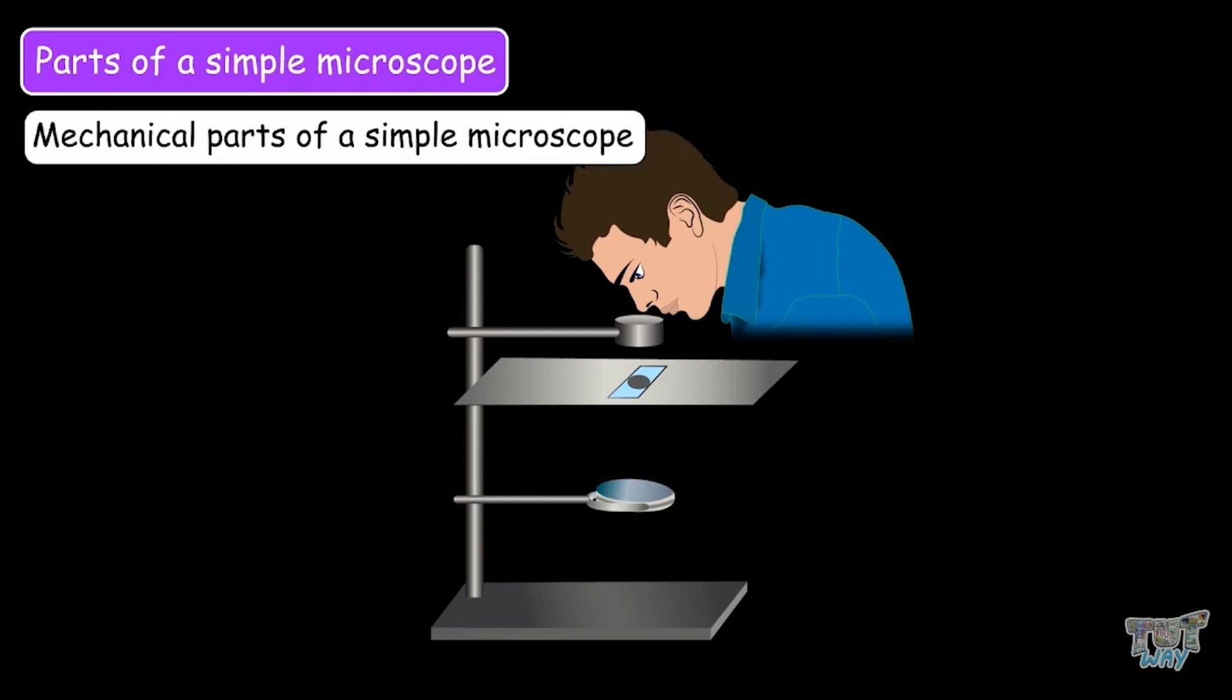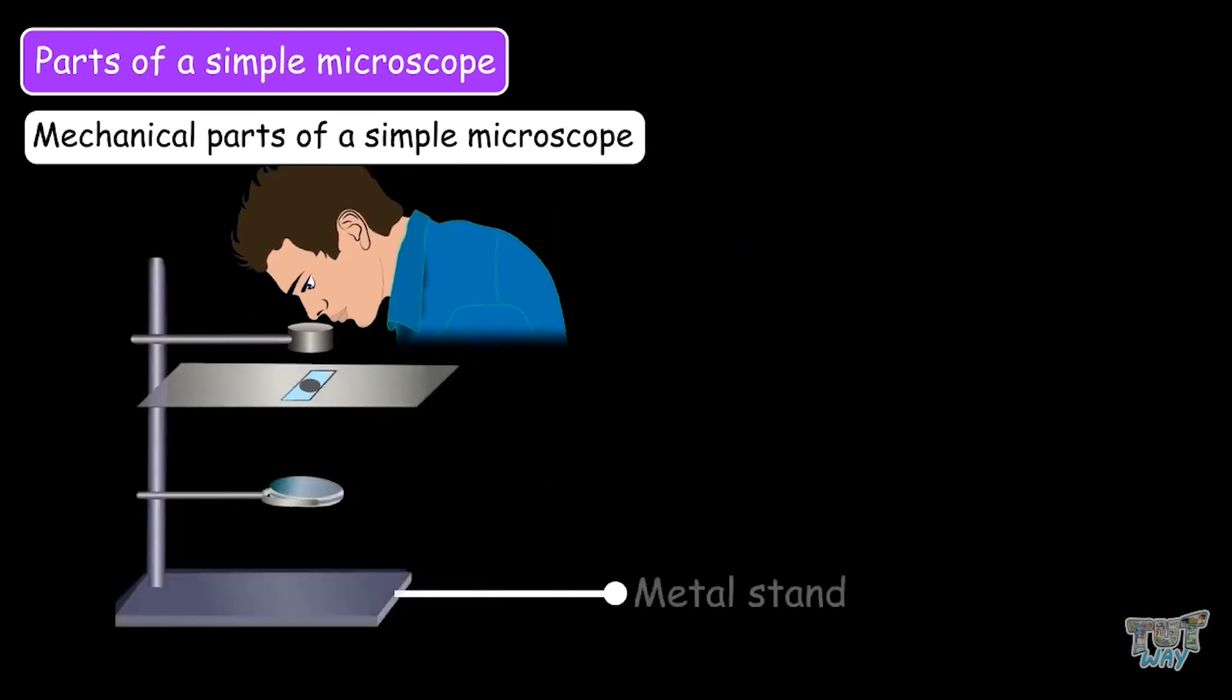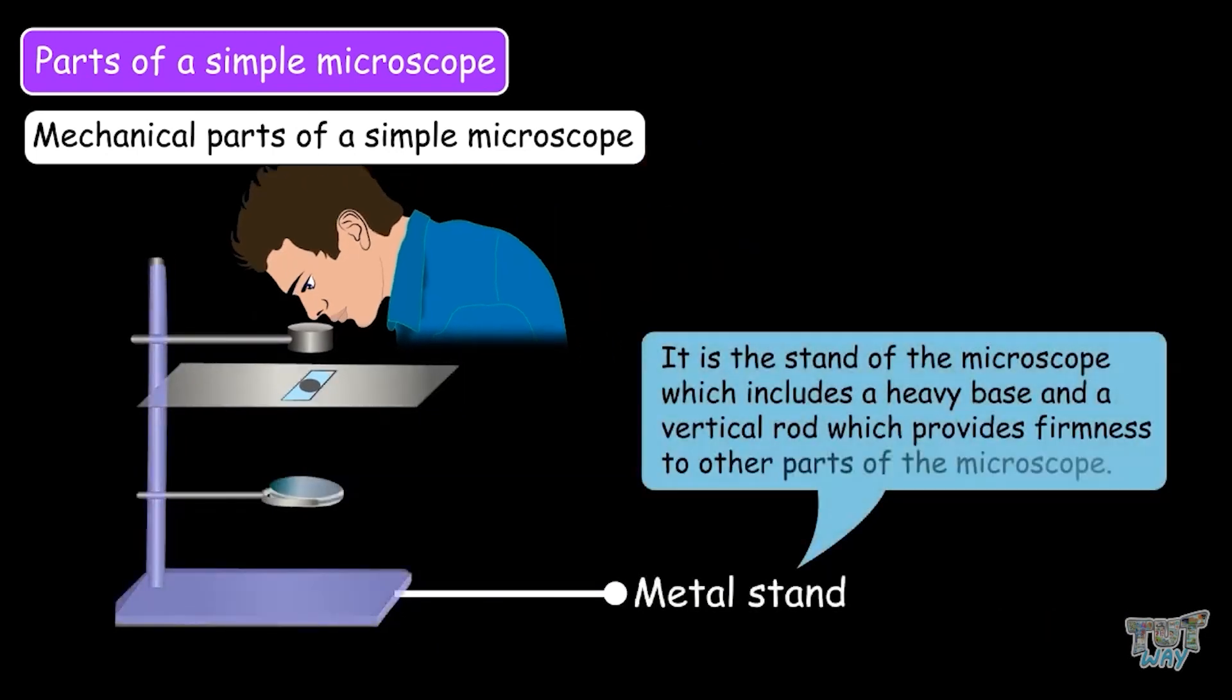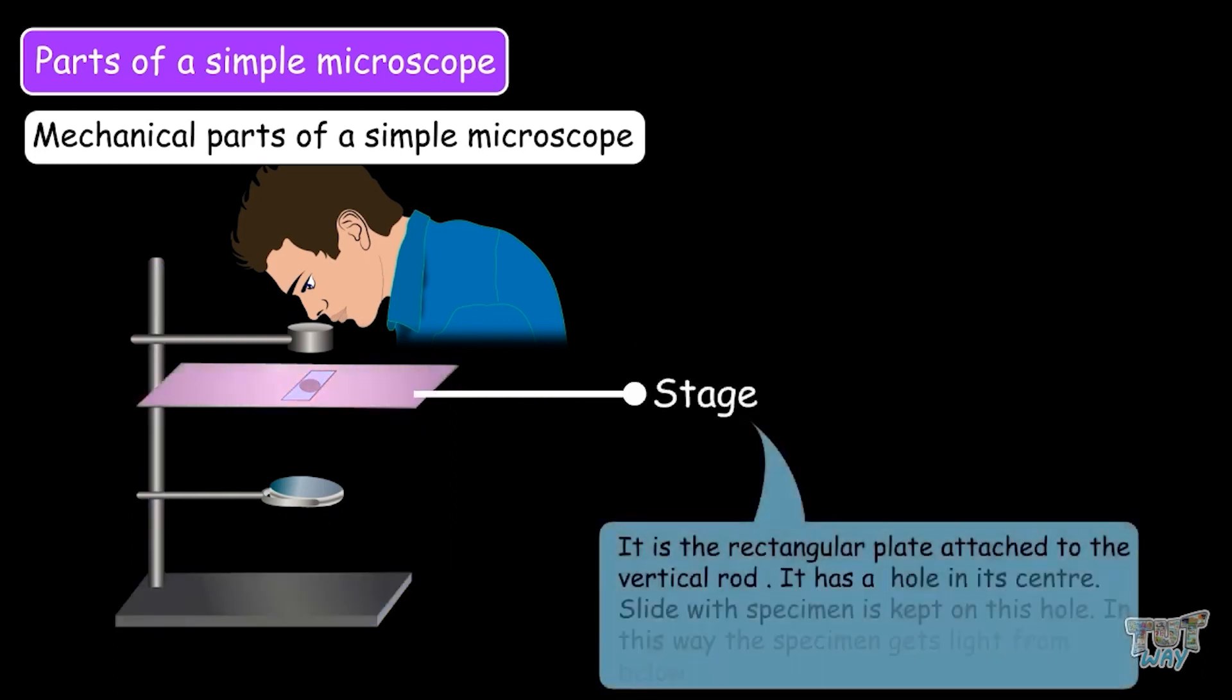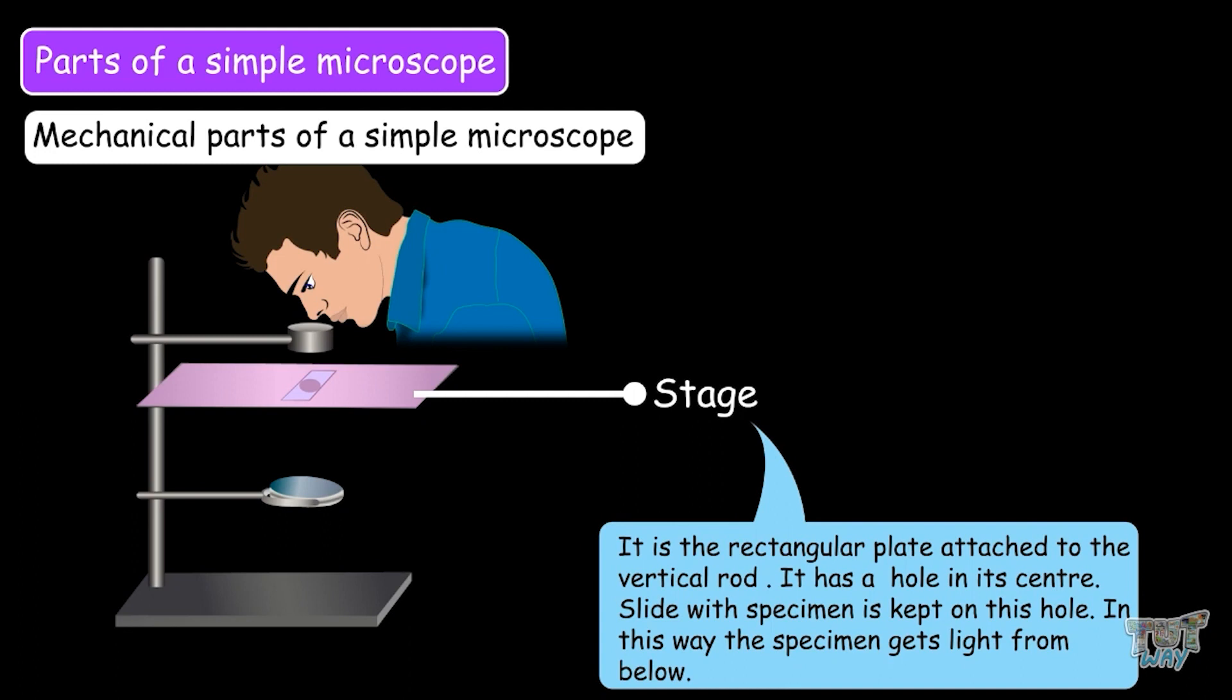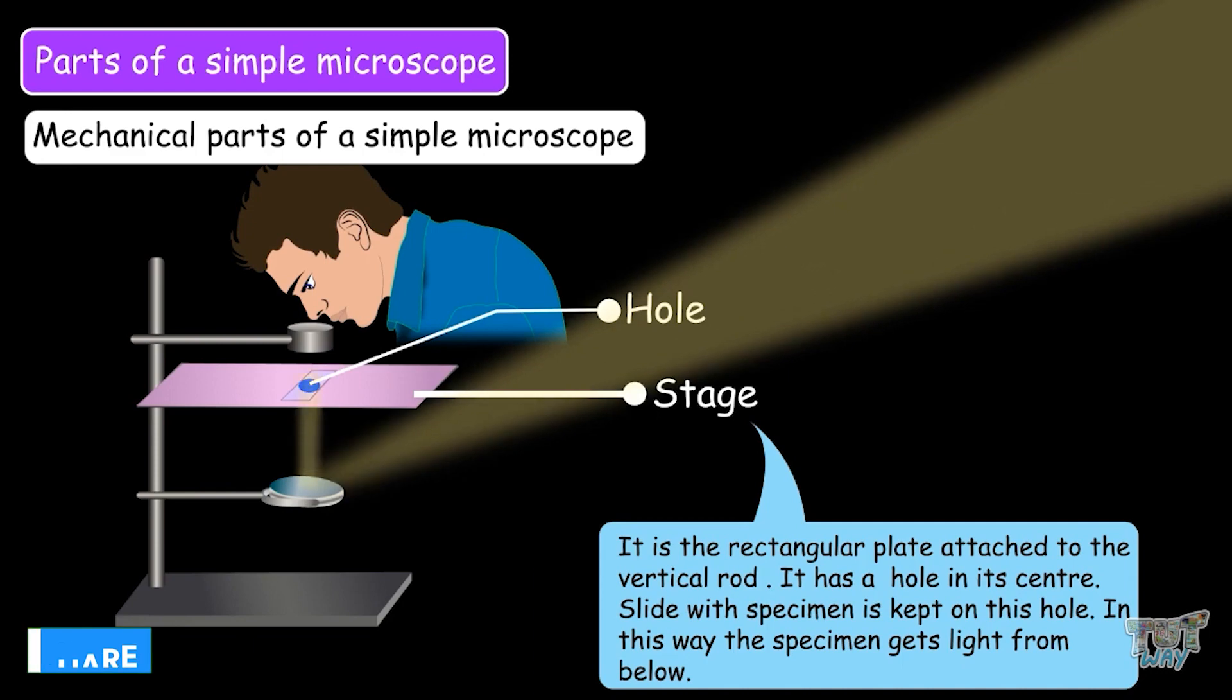Let's first learn the mechanical parts. Metal stand: It is the stand of the microscope which includes a heavy base and a vertical rod which provides firmness to the other parts of the microscope. Next is the stage. It is a rectangular plate attached to the vertical rod and this stage has a hole in its center. The slide with the specimen is kept over this hole and in this way the specimen gets light from below.